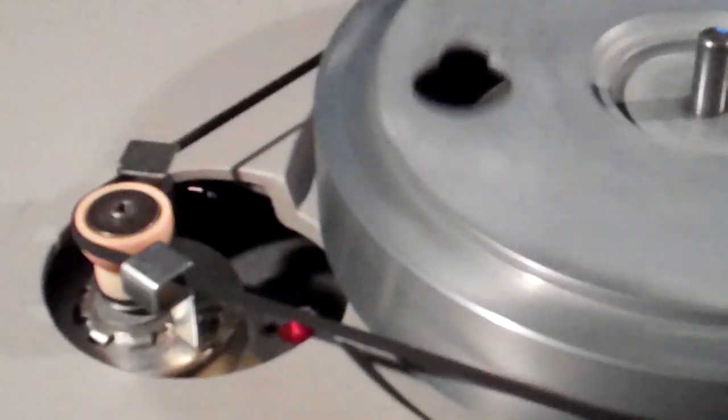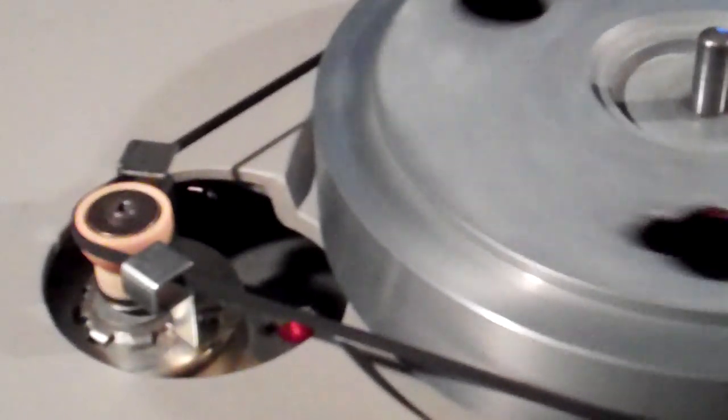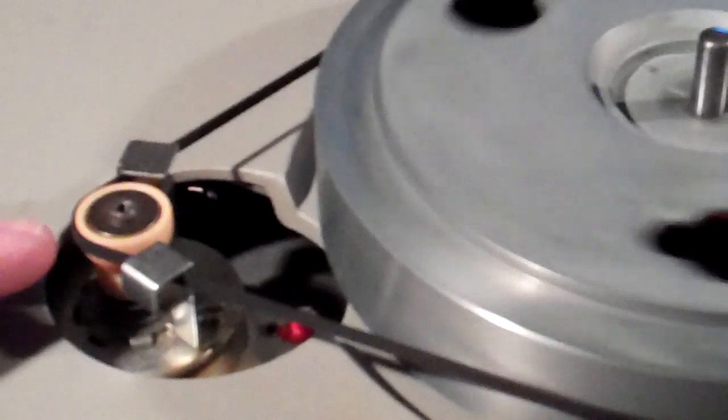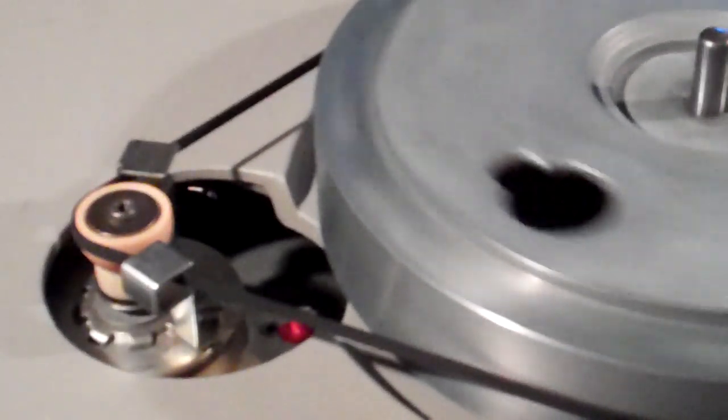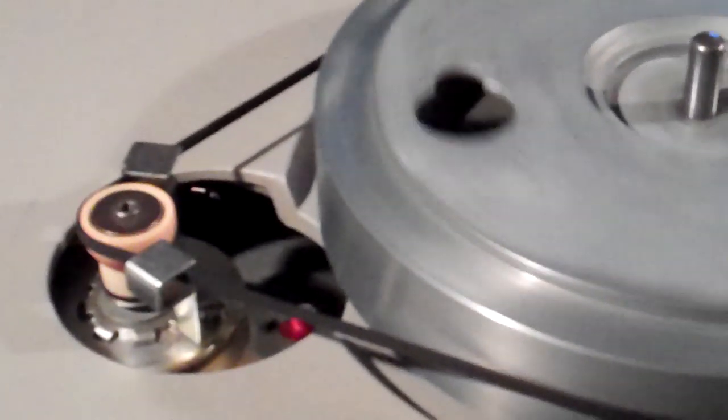It never rides down in the lower part of the pulley on a TD125, it's always at this upper part right here on top. Then obviously it goes around the whole drive platter.